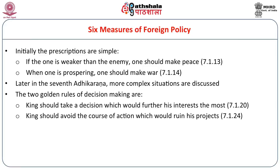Shadgunya is very popular in Sanskrit literature. The way these are discussed is by starting with simple propositions: if one is weaker than the enemy, one should make peace; if very strong and prospering, one should make war and annex the next kingdom. Then Kautaliya deals with more and more complex situations. In all these, the king's decision making is based on two rules: the king should take the decision which furthers his interest the most, and the king should avoid the course of action which would ruin his projects or strength. Nothing else should decide foreign policy.